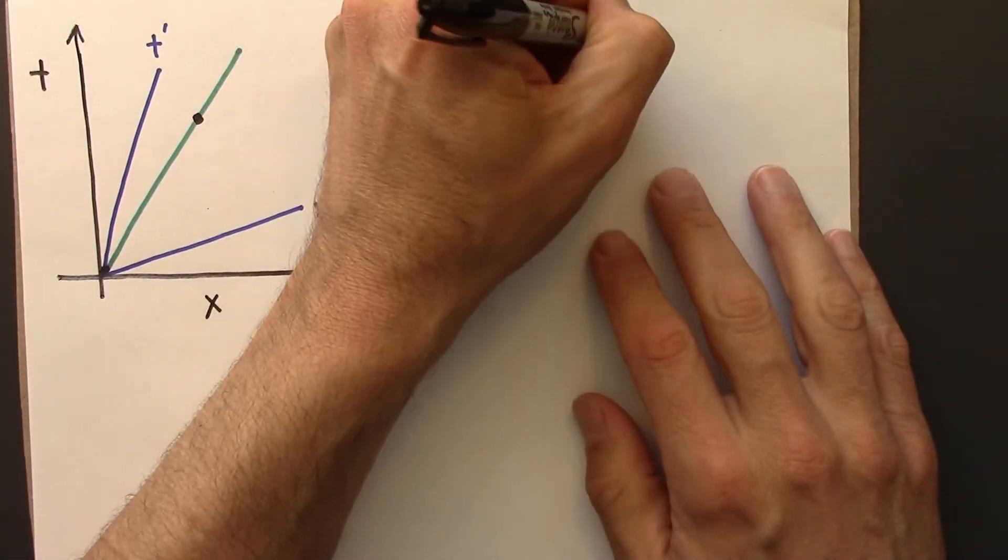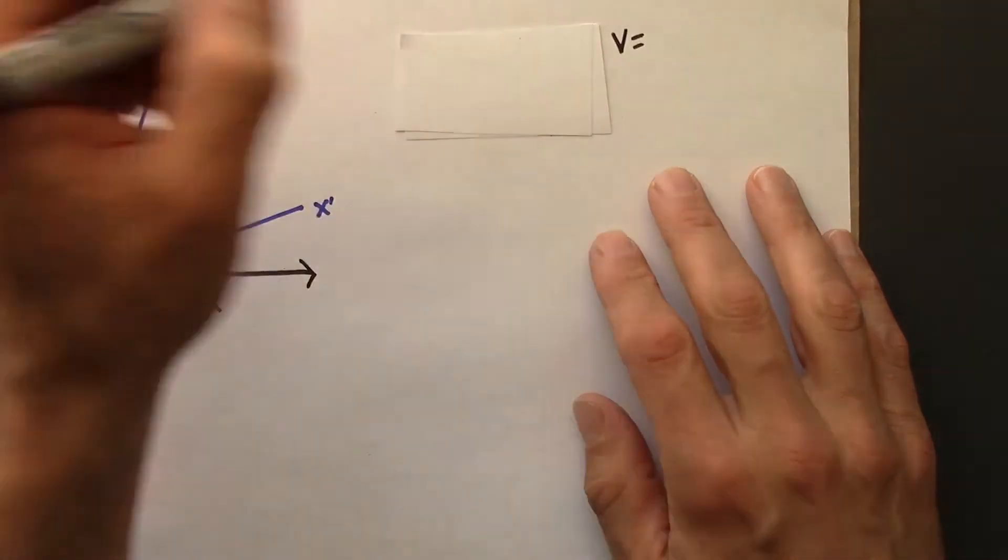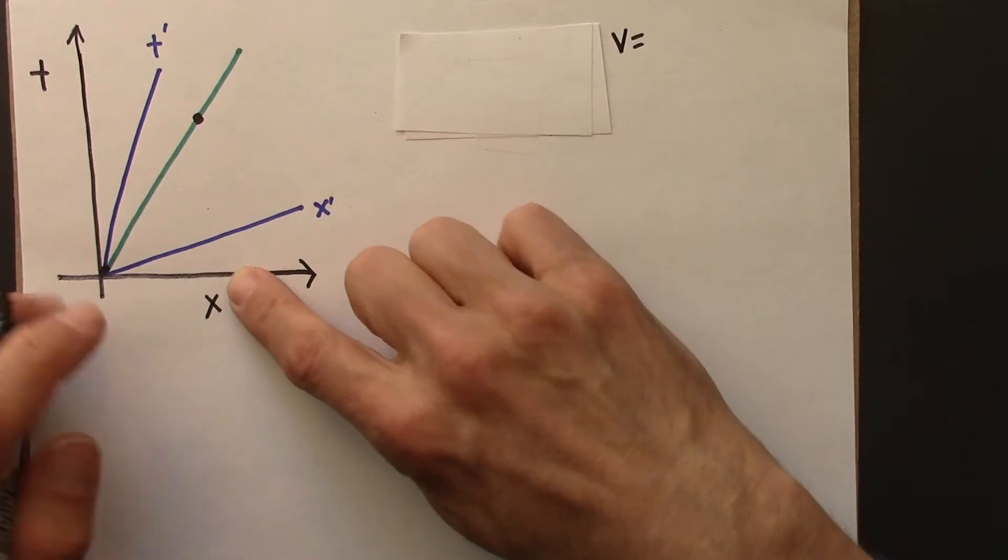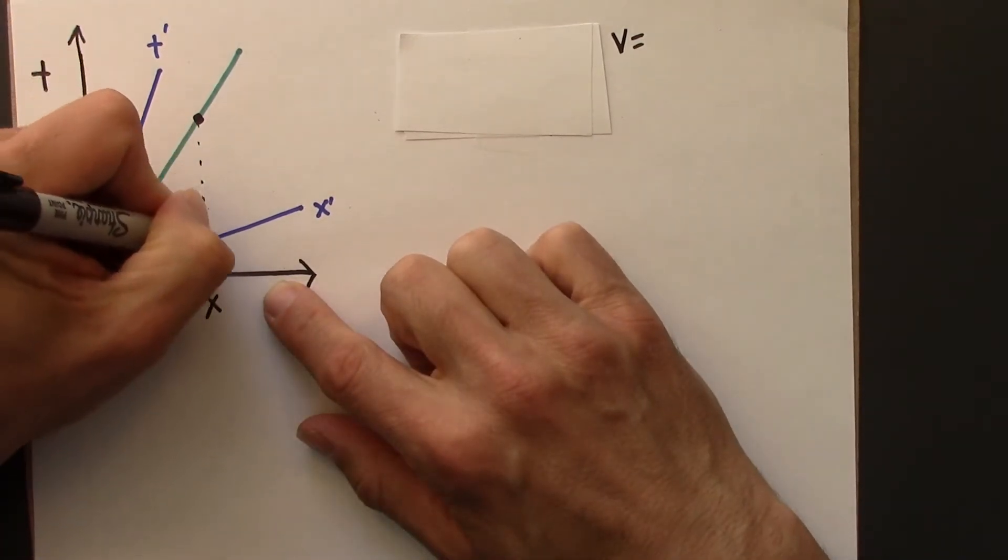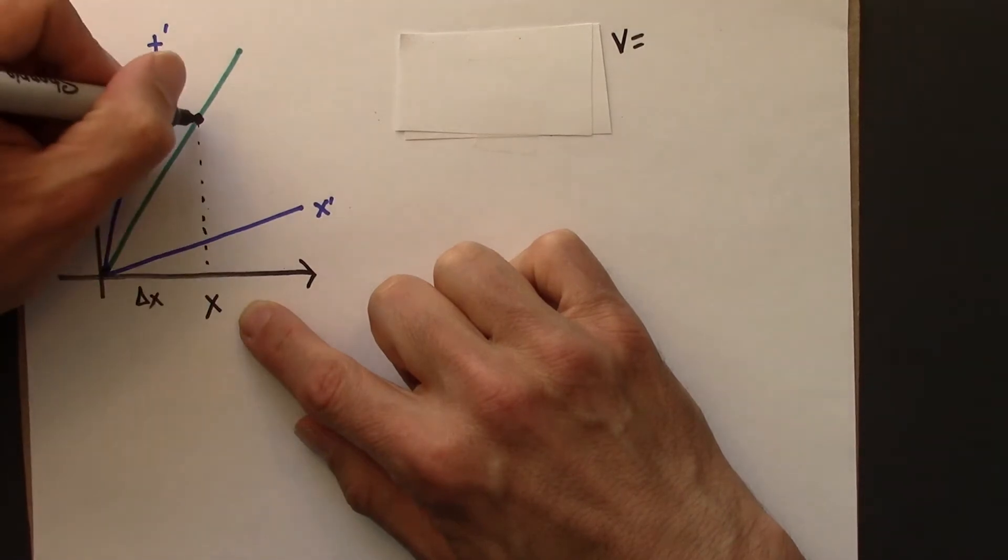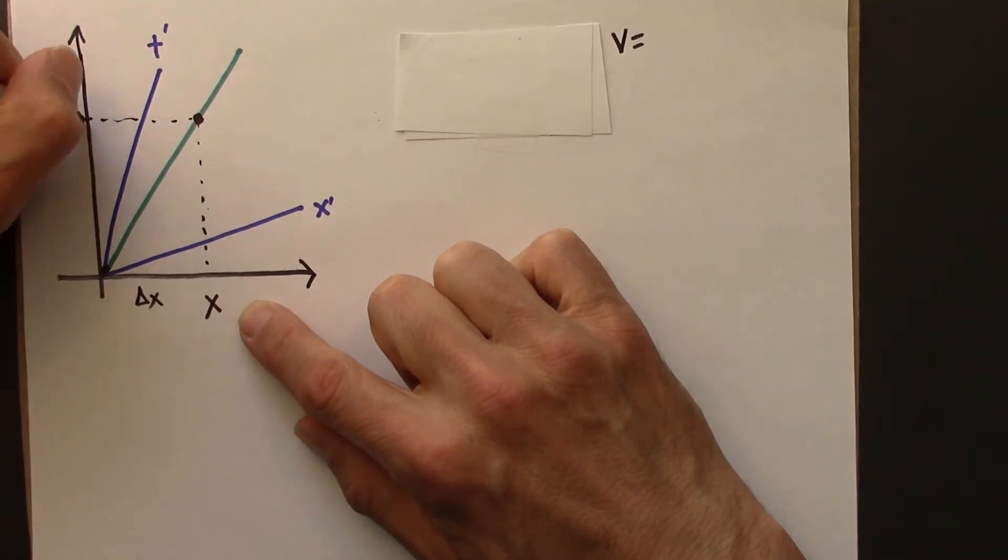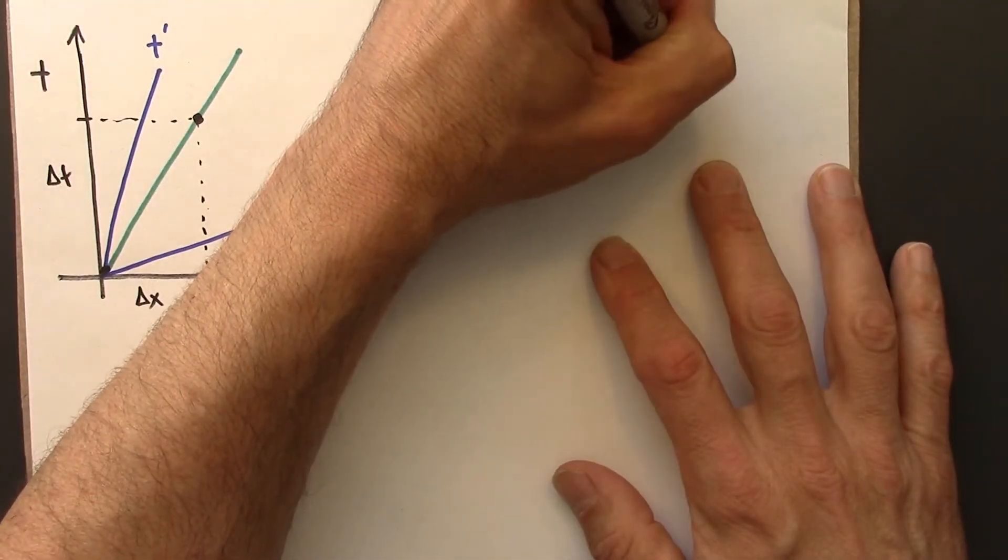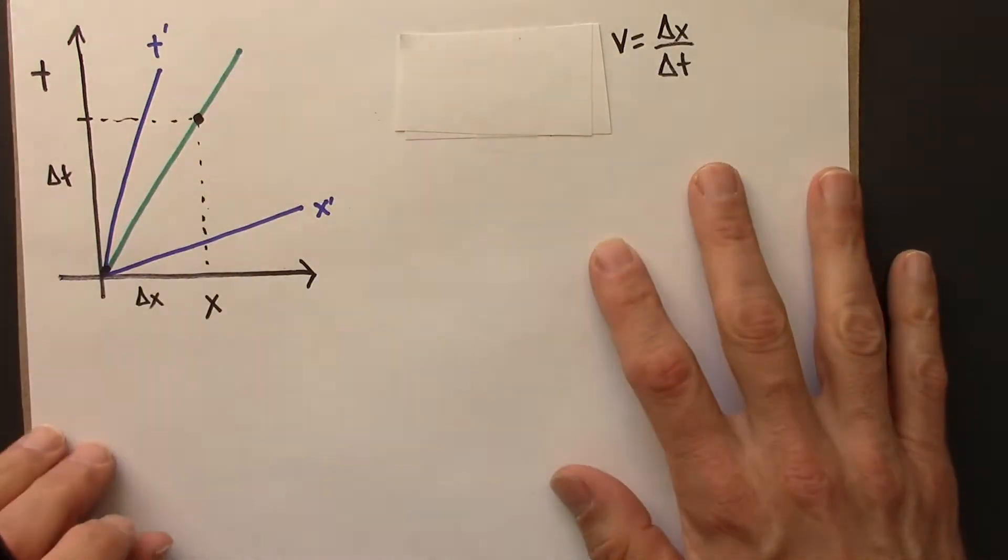So let me start by thinking about the speed in the unprimed frame. So the speed velocity is delta x, so this will be delta x, and then this is delta t.